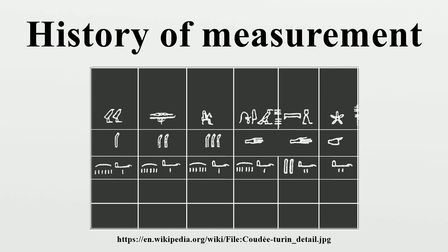Early Babylonian and Egyptian records and the Hebrew Bible indicate that length was first measured with the forearm, hand, or finger, and that time was measured by the periods of the sun, moon, and other heavenly bodies.